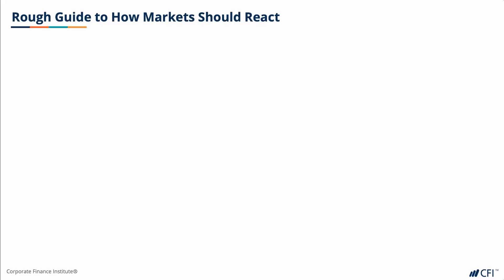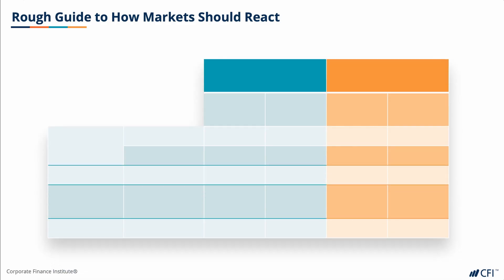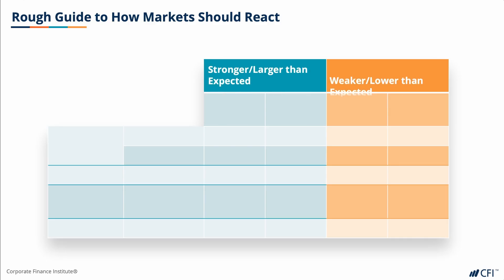When professionals get it wrong, markets should move. Here we've included a rough guide as to how markets should move based on whether the actual economic release was stronger or weaker than expected, and it's sorted by asset class.